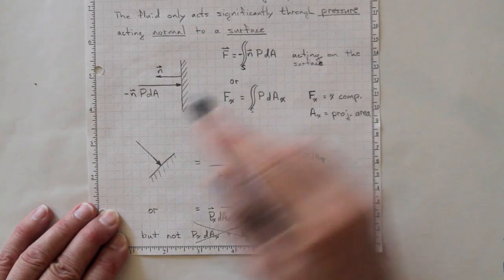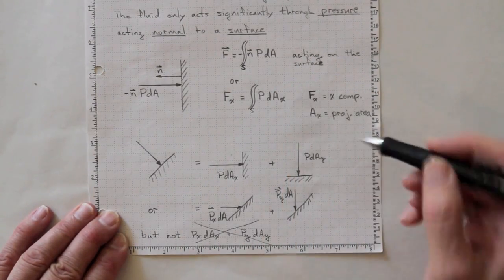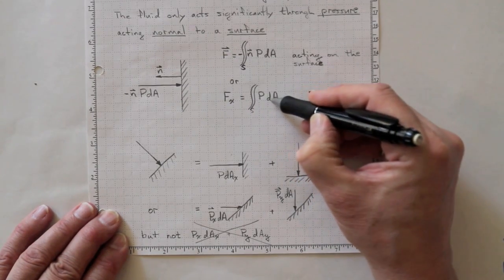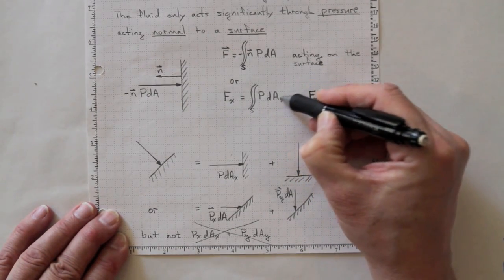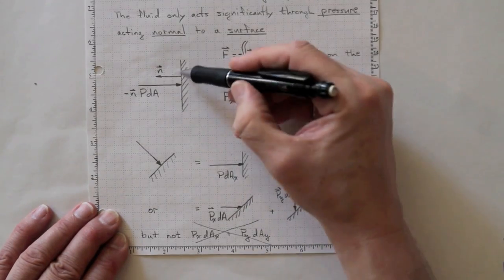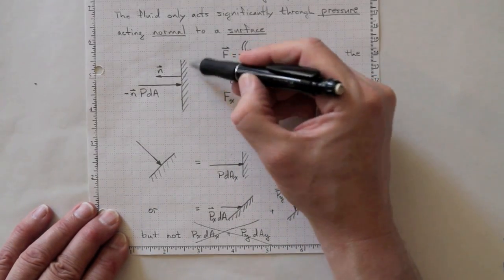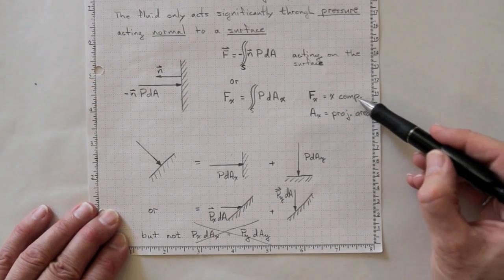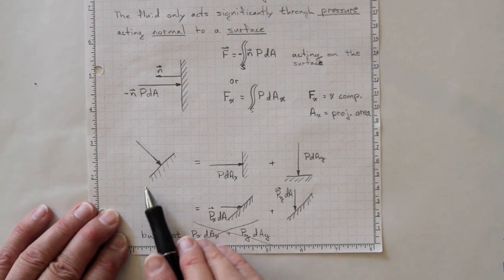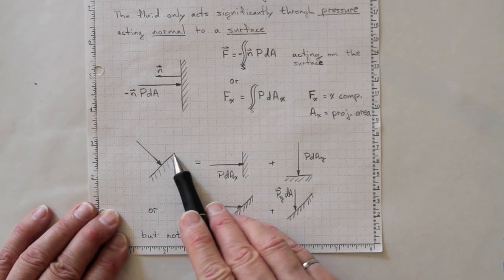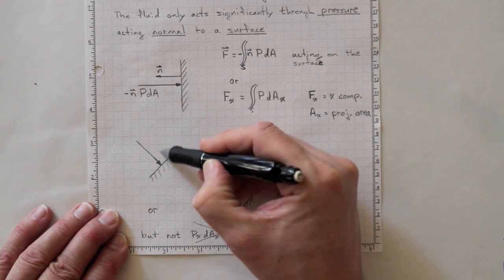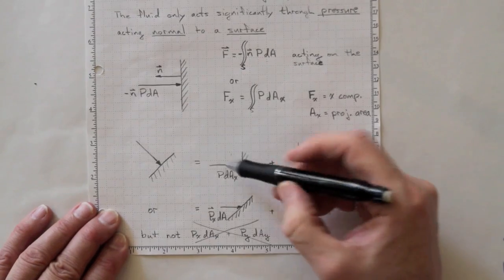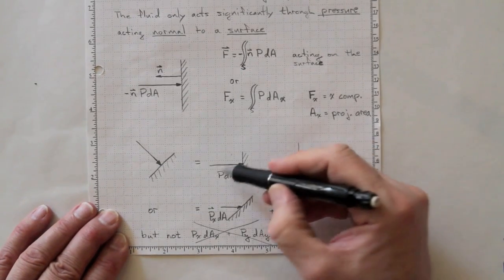The force acting in the x direction is the integral over the surface of pressure times the projected area in the x direction. So in this case, the entire area is projected in the x direction. If we look at a surface like this, it's going to have a component of force in the y direction and a component of force in the x direction. We can break it down into components.